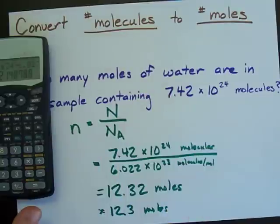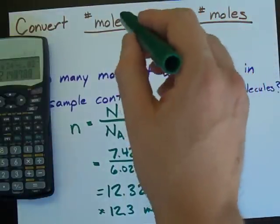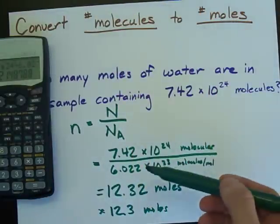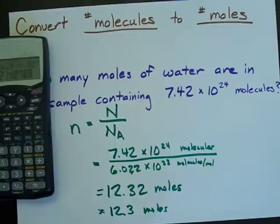Long story short, use the formula. Converting number of molecules into number of moles, just divide it by 6.022 times 10 to the 23. Best of luck.